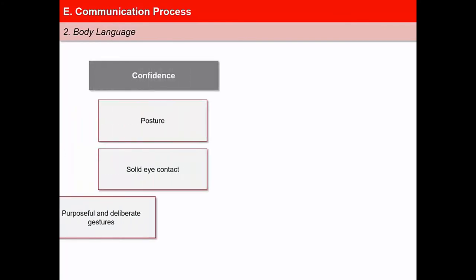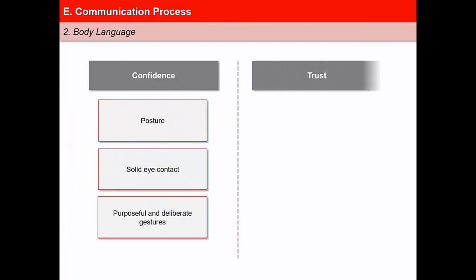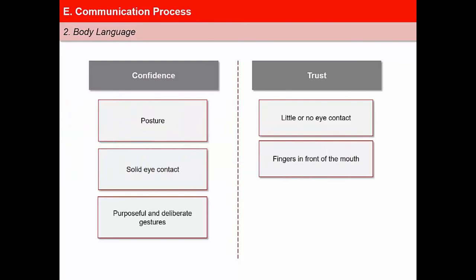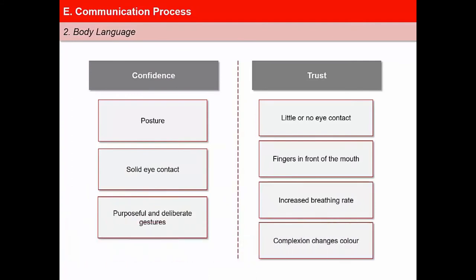Your body language shows how confident you are. It gives an impression that the person is worth listening to. An agent can look confident through his posture and through purposeful and deliberate gestures. Another important factor is trust. In a conversation, the agent has to be aware of some typical signs that may indicate when one is not honest and believable, and be on guard against them. They are: little or no eye contact, hand or fingers in front of one's mouth when speaking, increasing breathing rate, face turning red, excessive sweating, etc.